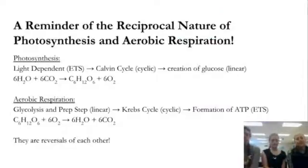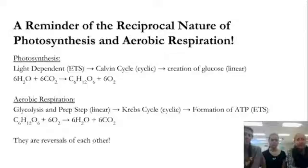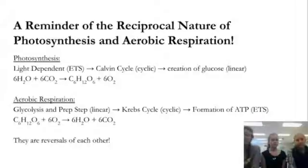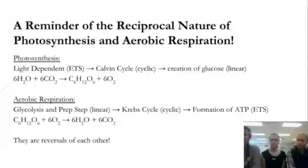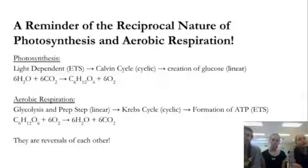A reminder about the reciprocal nature of photosynthesis and aerobic respiration: photosynthesis begins with the light-dependent reaction, which is an electron transport system, moves on to the Calvin cycle which is cyclic, and ends with creating glucose in a linear process. Aerobic respiration begins with glycolysis and the prep step, which is linear, then moves to the Krebs cycle which is cyclic, and ends with ATP formation via an electron transport system and the formation of water. The products and substrates are also reversals of each other — what goes into photosynthesis comes out of cellular respiration, and vice versa.